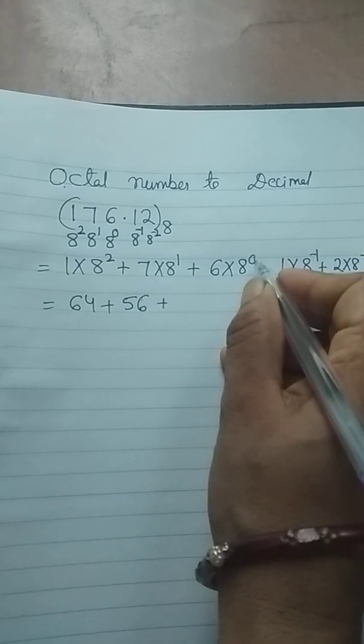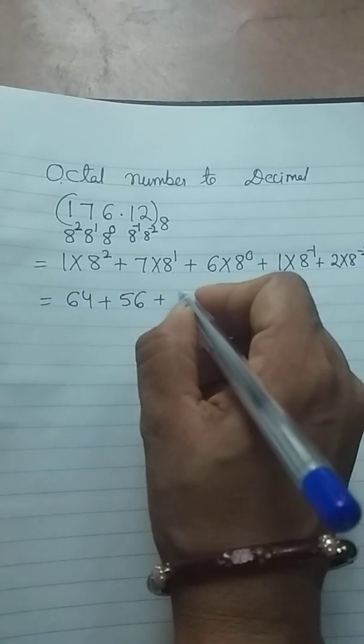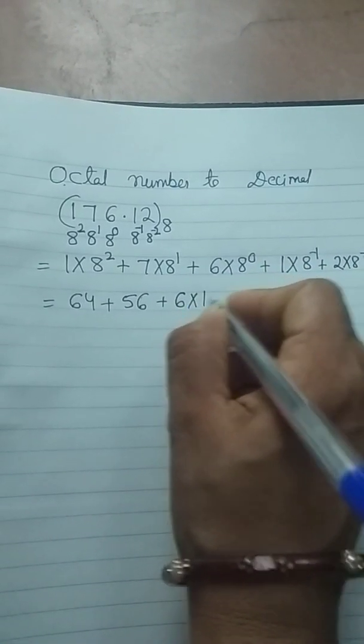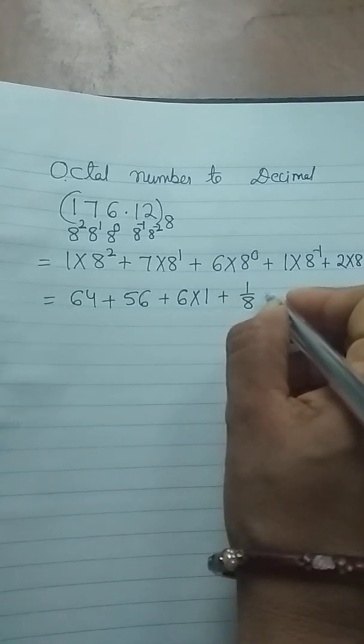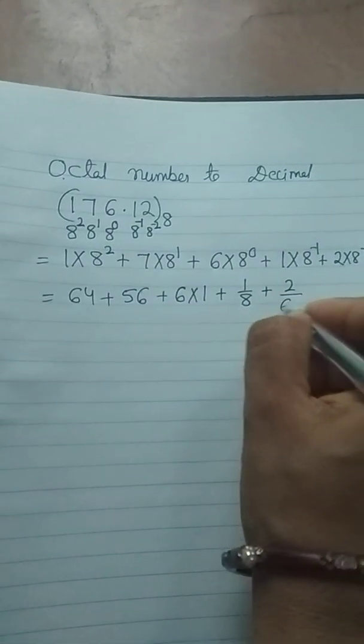Here 64 plus 56 plus, as you know some number to the power of 0 will be 1. So 6 into 1 plus 1 by 8 plus 2 by 64.